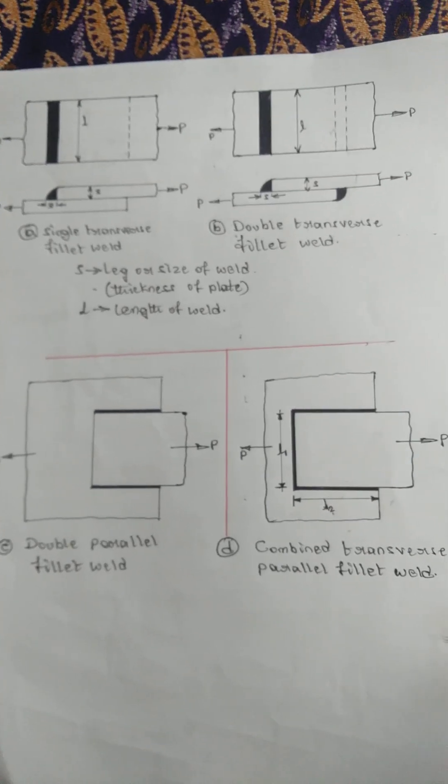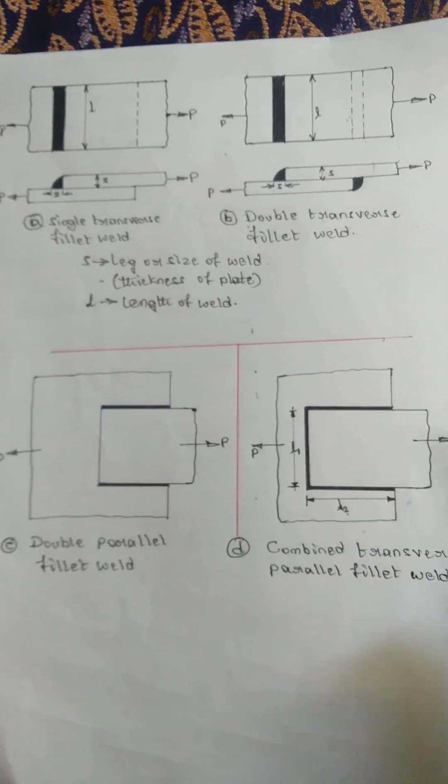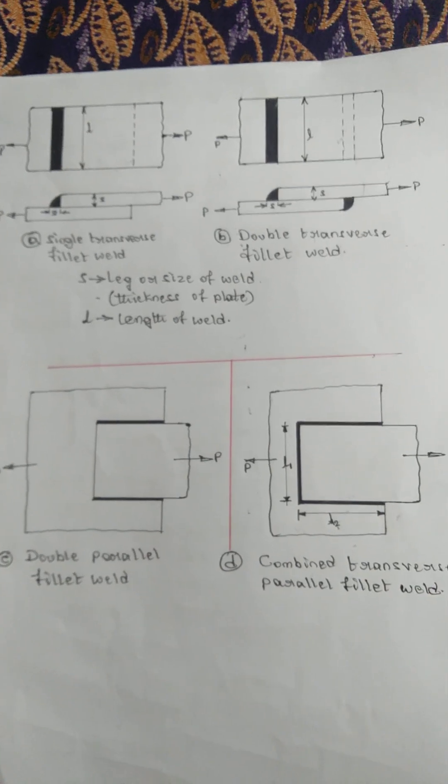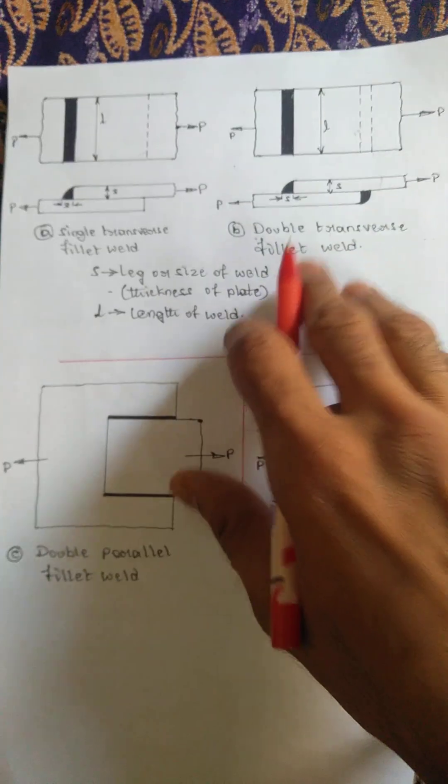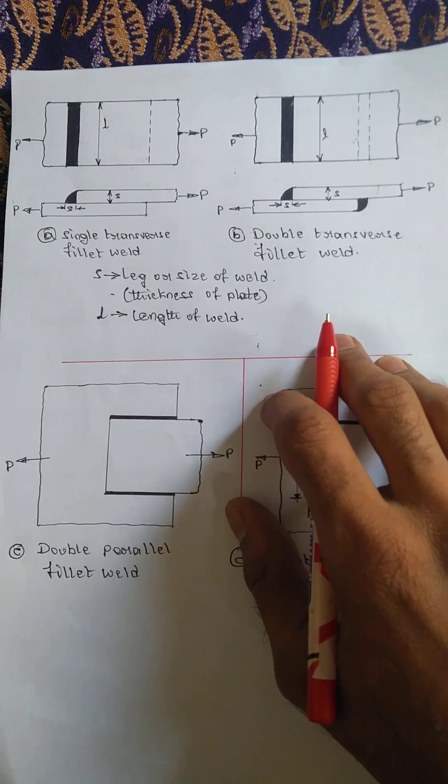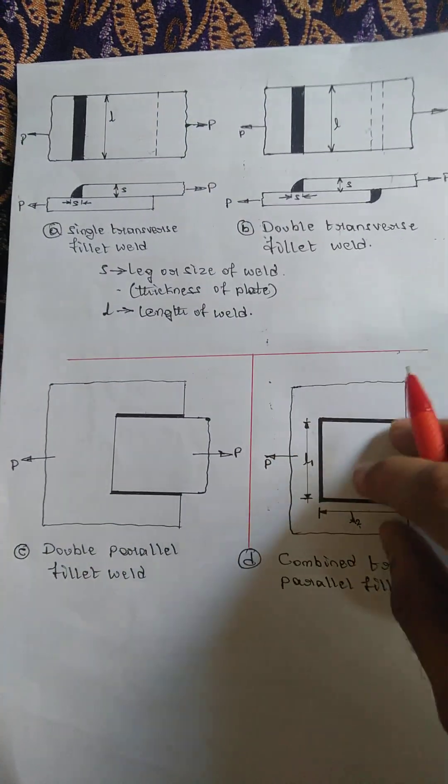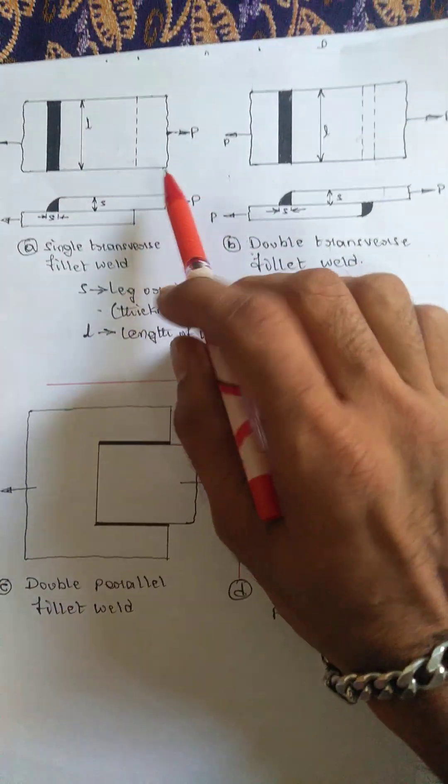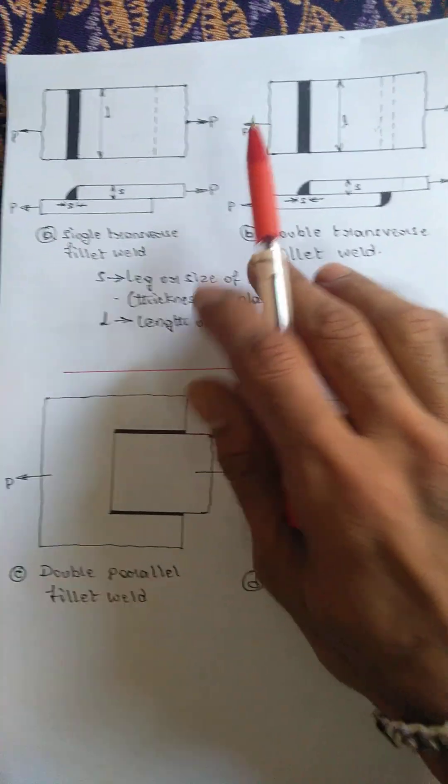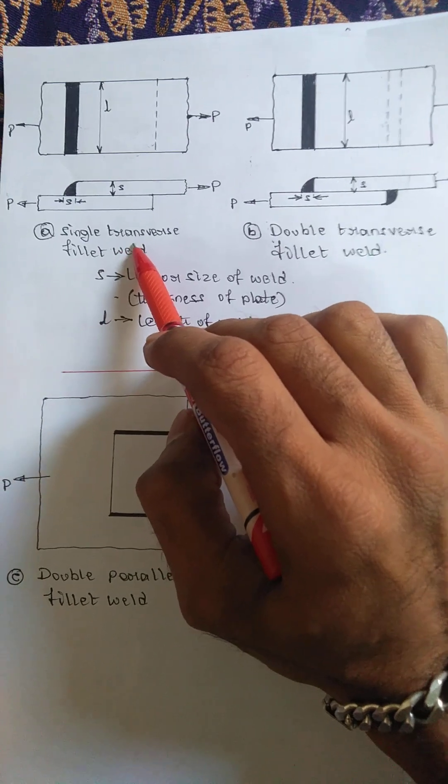Hello friends, I'm solving a problem from welding. The subject is design of machine element 2. Before starting the problem, I'll brief on the problem related theory. This is a welding concept - this one is transverse fillet weld.